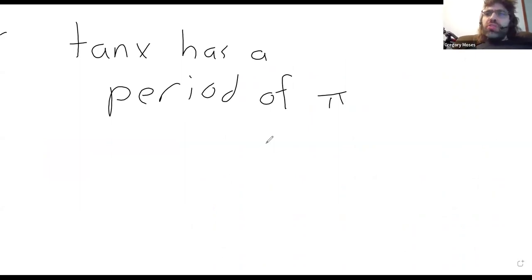The sine and the cosine have periods of 2 pi. The tangent has a period of pi. And then one period of the tangent as we saw on the graph looks like that.